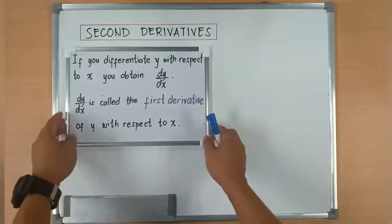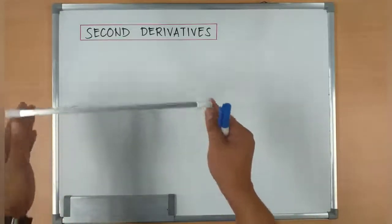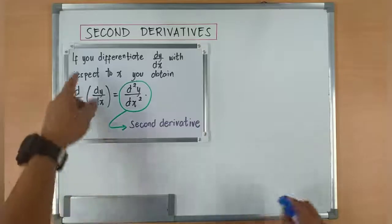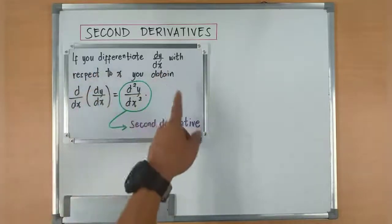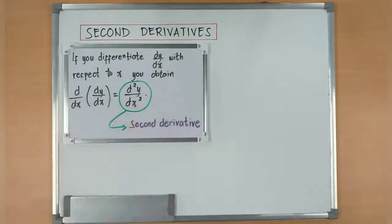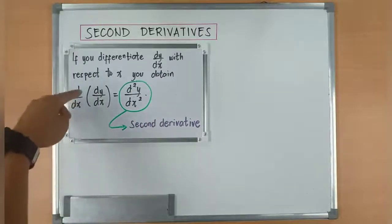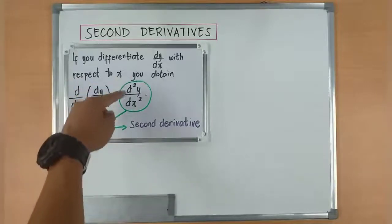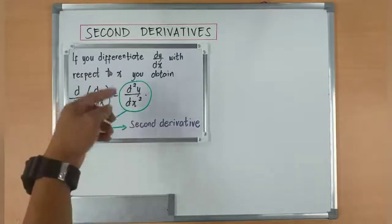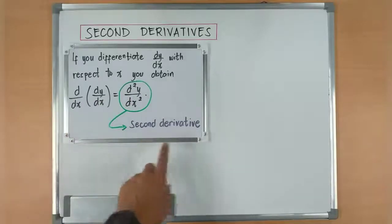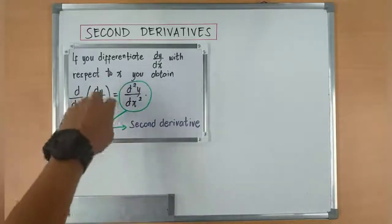When you do the differentiation in two, so if you differentiate dy over dx with respect to x, you obtain d over dx or the derivative of dy over dx which is d squared y over dx squared. So basically, when we say second derivative, it is represented by this.